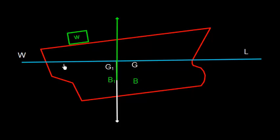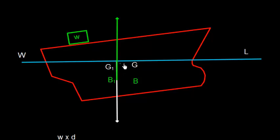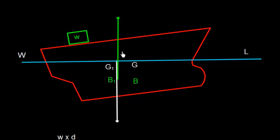Since G has shifted from G to G1, the center of buoyancy will also shift from B to B1. This makes sense because the underwater volume is increased on this side — the underwater volume was only this portion earlier, and now it has increased. So B will also shift from B to B1, and the force of buoyancy will now act vertically upward from B1.